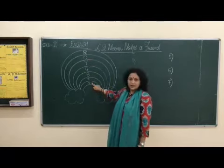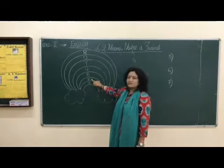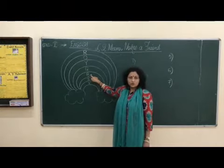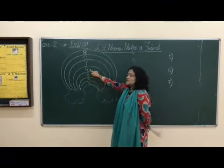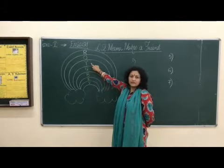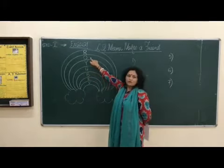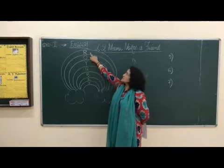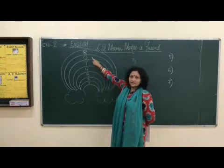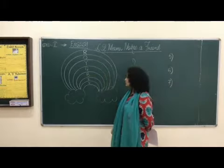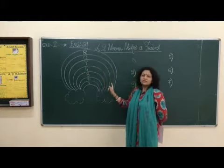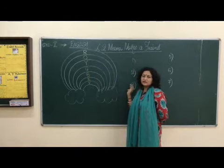V stands for violet, I stands for indigo, B stands for blue, G stands for green, Y stands for yellow, O stands for orange, and R stands for red. If you remember these letters — the word VIBGYOR — then you are able to colour this rainbow properly with all seven colours.